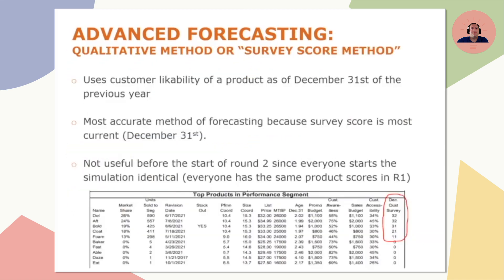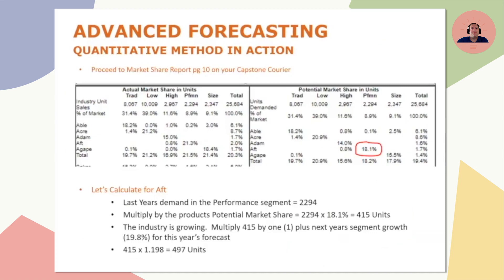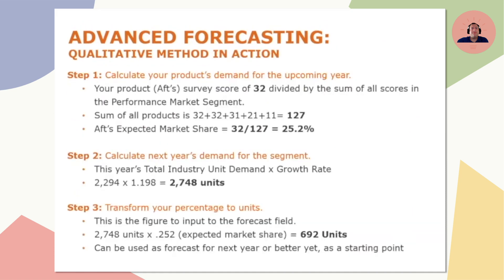Looking at the prior market share method, had I assumed it was the potential market share, it only would have been 497 units and we probably would have stocked out. That's because AFT just so happens to have ended that round quite a bit better than where it started. You could stop there, call 692 units your forecast and be done with it.